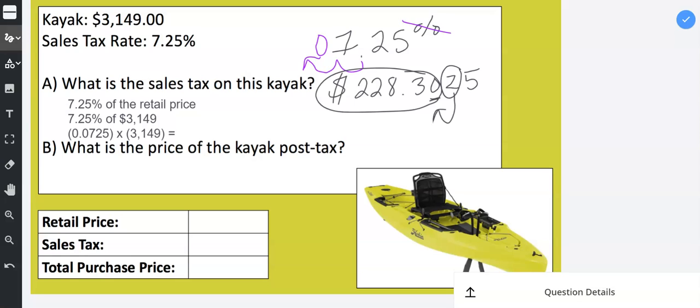Think about that. So if you buy a larger item like a kayak for a couple thousand dollars, think about how much money goes to the government. In this example, $228.30 goes to the government. So let me start typing this into our table.